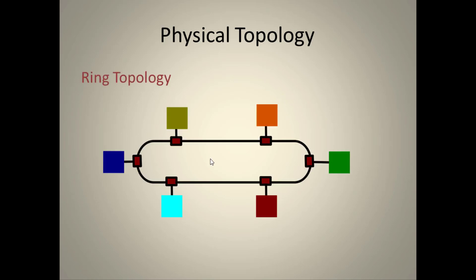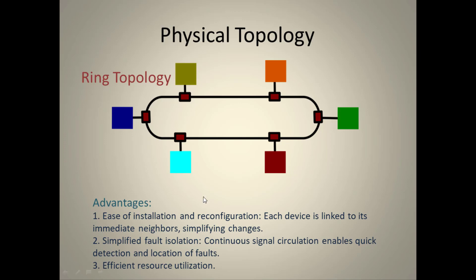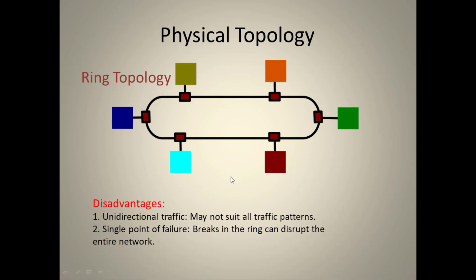In ring topology, all hosts are connected in a circular arrangement. Advantages include ease of installation, easy reconfiguration, simple fault isolation, and efficient resource utilization. The disadvantage is that traffic flows in one direction at a time, so a single fault can disrupt the entire ring.